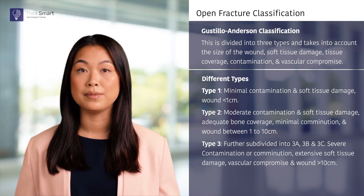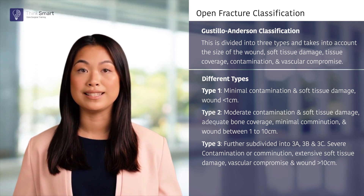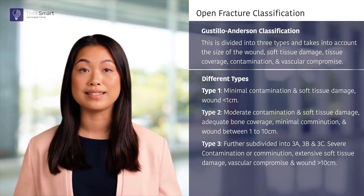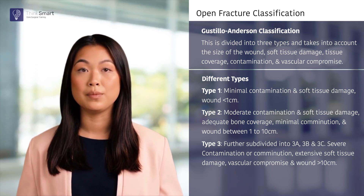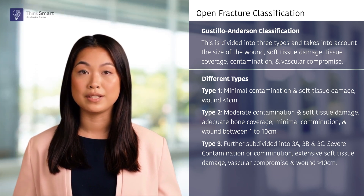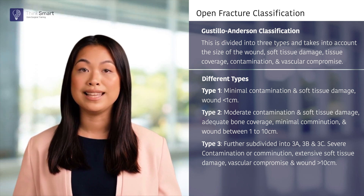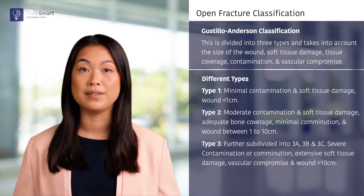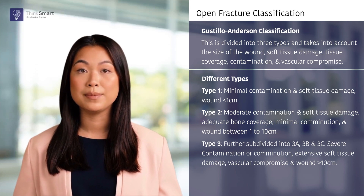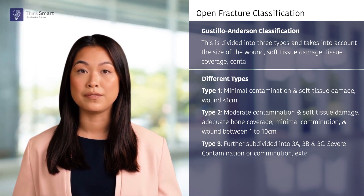Type 3 fractures are further categorized into A, B, or C subtypes, and are often found to have a laceration greater than 10 cm, extensive soft tissue damage, severe contamination or comminution, or vascular compromise.